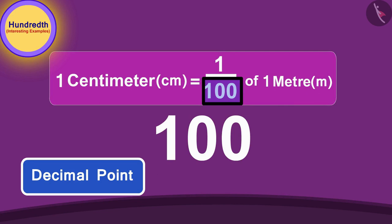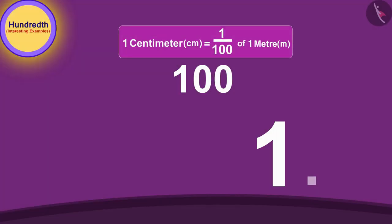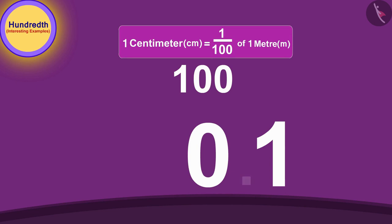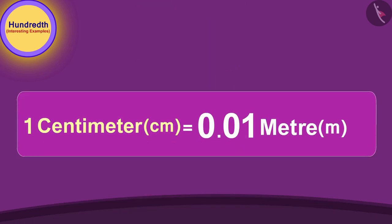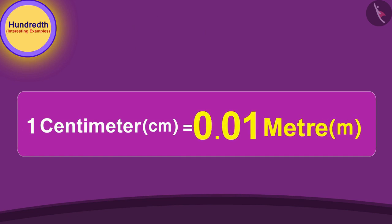'Absolutely right! Now it's very easy. We will move the decimal point twice to the left, starting from the end of the number. Because this number only has one digit, we add a zero and then slide the decimal point to the left a second time. In this way, one centimeter becomes 0.01 meter.'